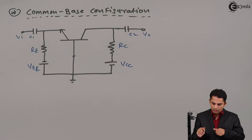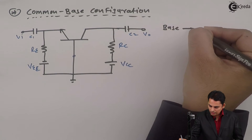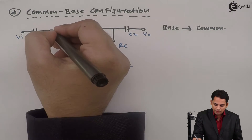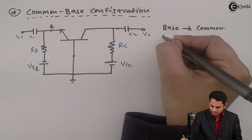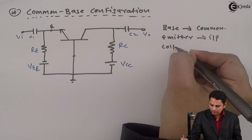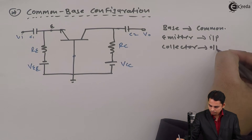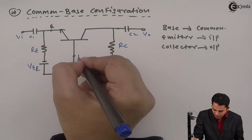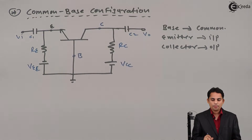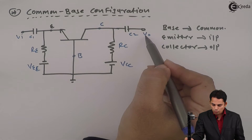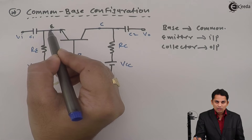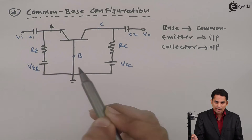In Common Base Configuration, the base terminal is the common terminal, whereas input is applied at the emitter. The emitter receives the input, while output is taken from the collector. This terminal is the emitter terminal and this is the collector terminal, with output taken at the collector and base common between input and output side.